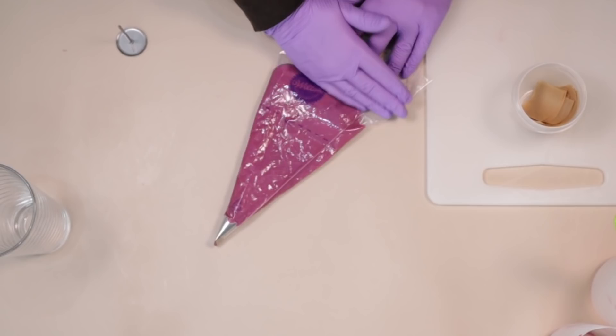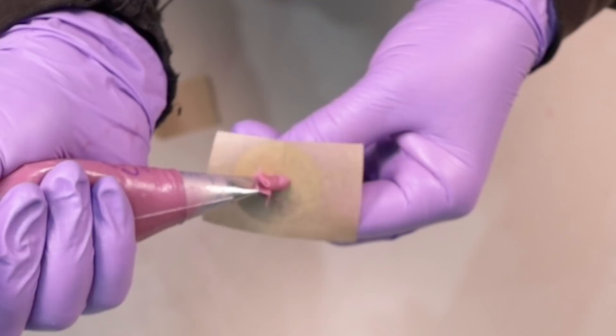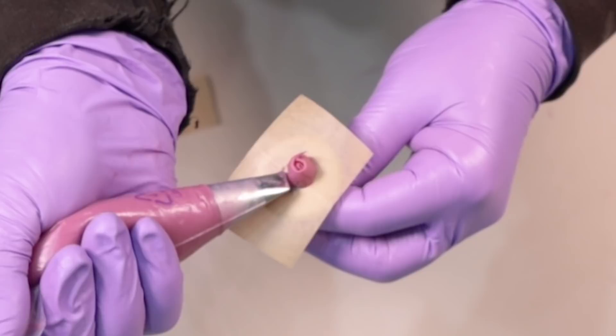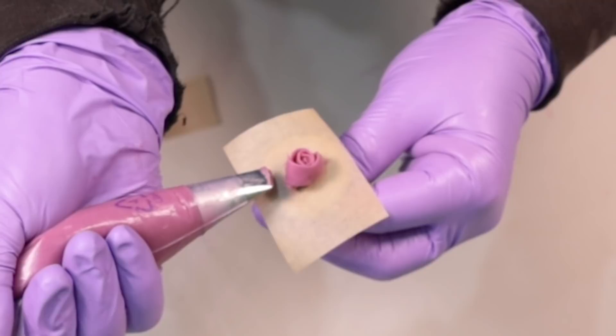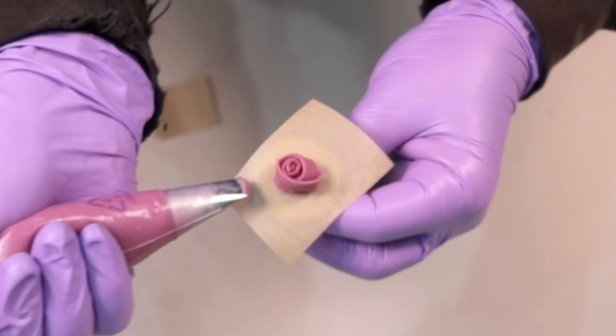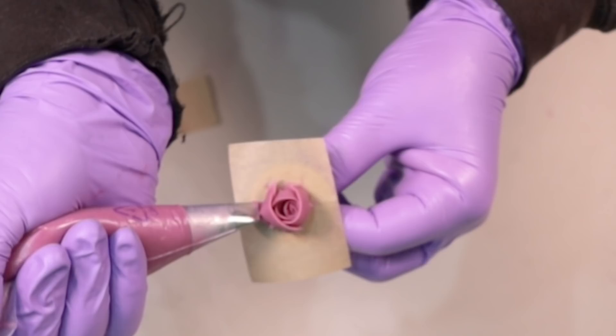So let's look at making a little rosebud first of all. Take your icing pin and pop a little blob of soap batter in the middle. Then holding your tip with the fat part at the bottom, you want to twist the pin while squeezing the icing bag to go around the blob that you've made. Do that a couple of times to start making your bud. Then to finish off your bud, put your tip sort of more horizontal on the icing pin and then drag it over the piping that you've already done to create this closed bud effect.